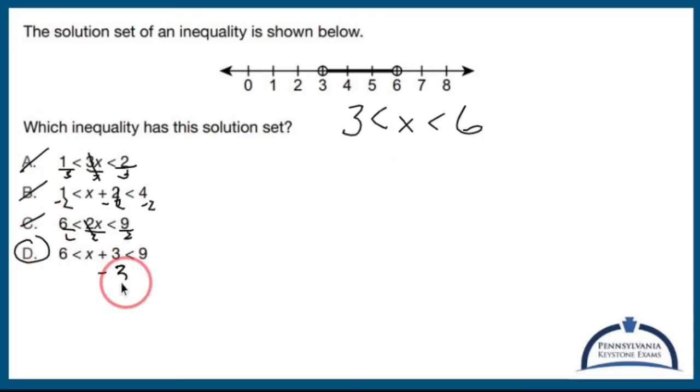It's got to be d. So let's subtract 3 from all three parts. You cross out. 6 minus 3 is 3. x is all alone. 9 minus 3 is 6. d is my guy. I'm happy.